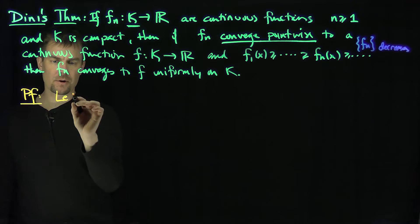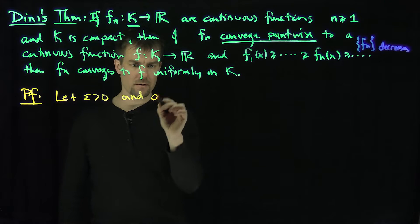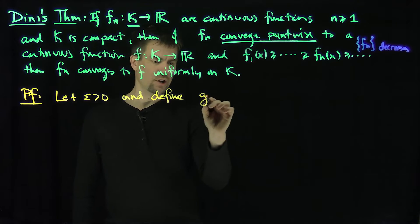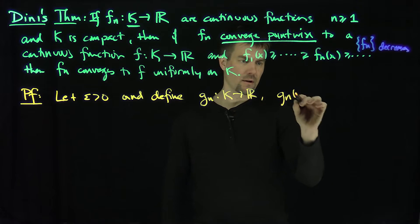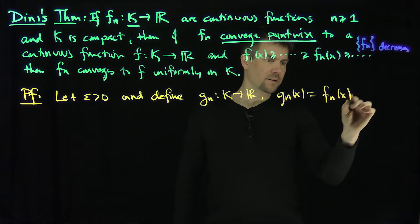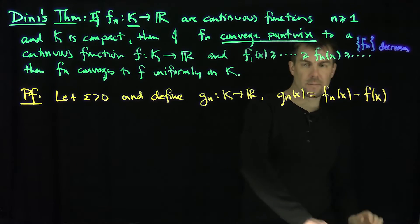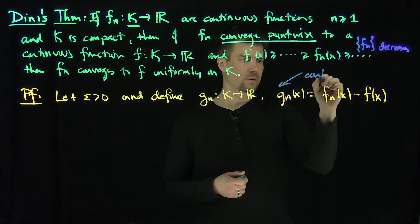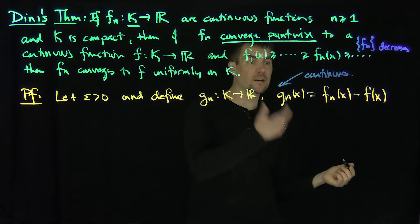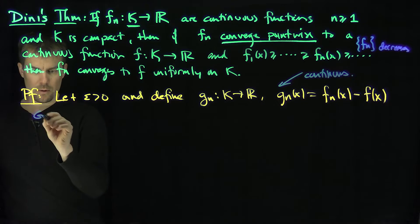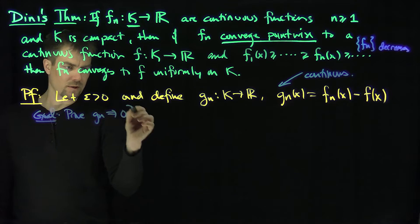Here's the proof of Dini's Theorem. Let epsilon be greater than zero and define new functions g_n mapping k into R, where g_n of x is equal to f_n of x minus f of x, the limit function. These g_n functions are automatically continuous because they are the difference of continuous functions. Our goal now is to prove that g_n converges uniformly to zero.